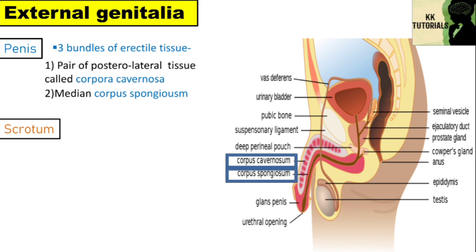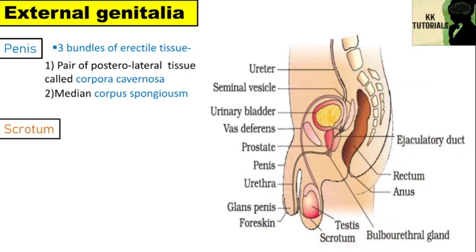The swollen tip of the penis is called the glans penis. It is covered by a loose fold of skin called the foreskin or prepuce.